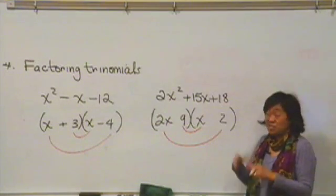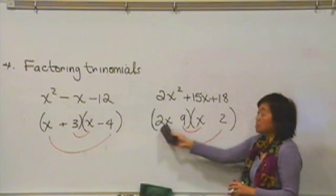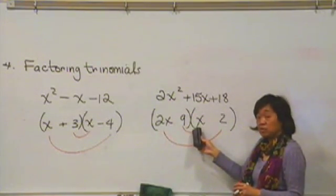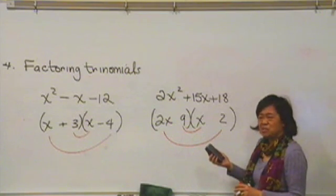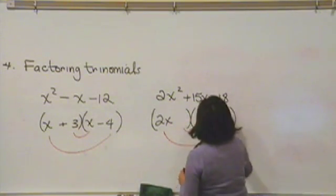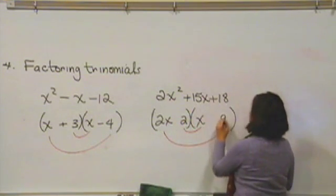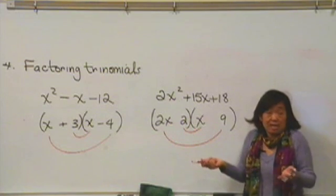But before you toss out 9 and 2, because these here are not both x's, one is a 2x and one is an x, you have to stop and ask yourself, what if I were to switch them around? What if I were to put a 2 here and a 9 here? You have to ask yourself, will that help?